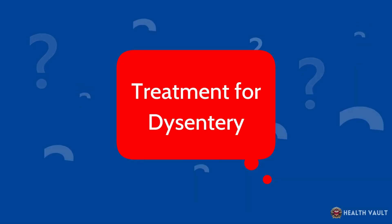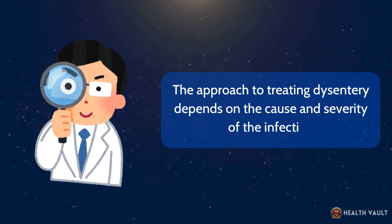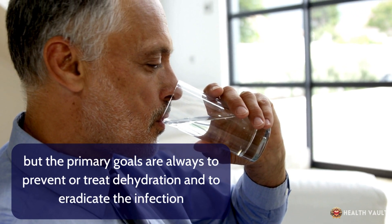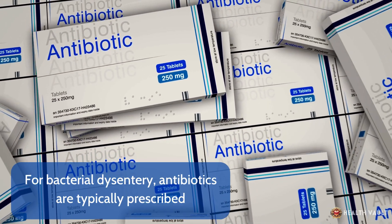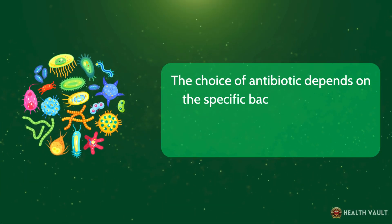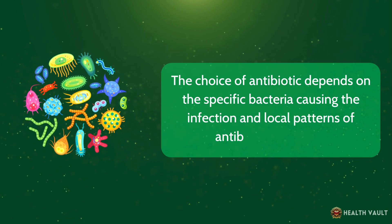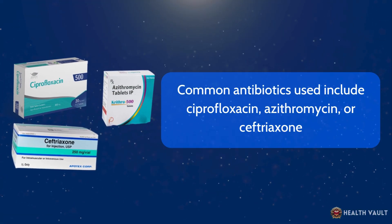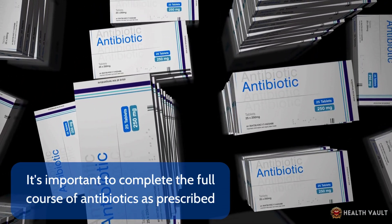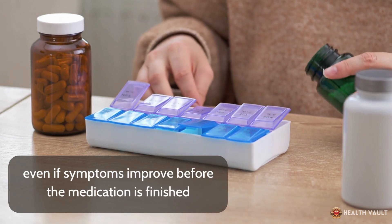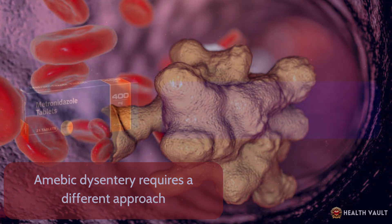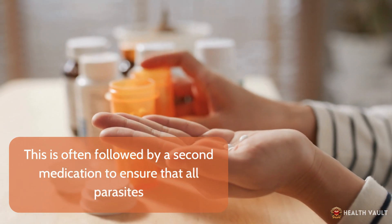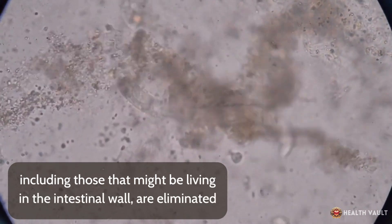The approach to treating dysentery depends on the cause and severity of the infection, but the primary goals are always to prevent or treat dehydration and to eradicate the infection. For bacterial dysentery, antibiotics are typically prescribed, with common options including ciprofloxacin, azithromycin, or ceftriaxone, depending on the specific bacteria and local antibiotic resistance patterns. It's important to complete the full course of antibiotics as prescribed, even if symptoms improve before the medication is finished. Amoebic dysentery is treated with antiparasitic drugs, most commonly metronidazole, often followed by a second medication to eliminate all parasites including those living in the intestinal wall.